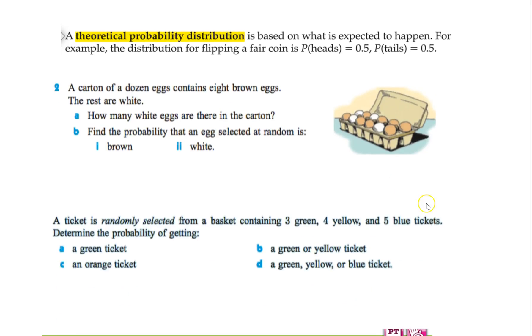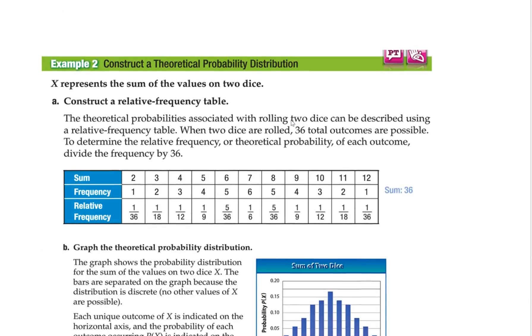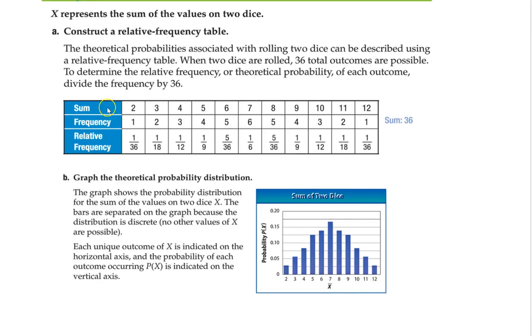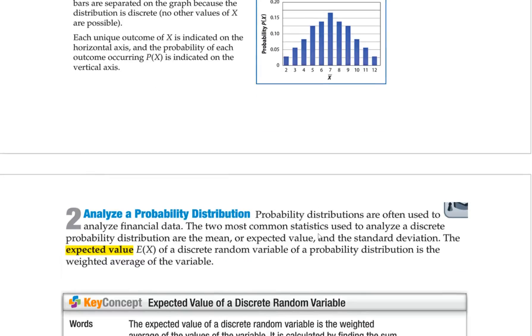Now we can do one for theoretically. Theoretically, remember we talked about, it's based on knowledge and logic and mathematics. We'll do this problem right here. A carton of a dozen eggs contains eight brown eggs. The rest are white. Here's my dozen eggs. My total is 12. I know eight of them are brown. And the rest are white. So four. Find the probability that an egg selected at random is brown. So you go, okay, 1 over total. We didn't do any experiments. We just did the math on it. There's 12 total. There's eight brown. So eight out of 12, or 66%. White, there's four of those. There's 12. So you get one third, 33%. And that's the idea. You do it based on theory.